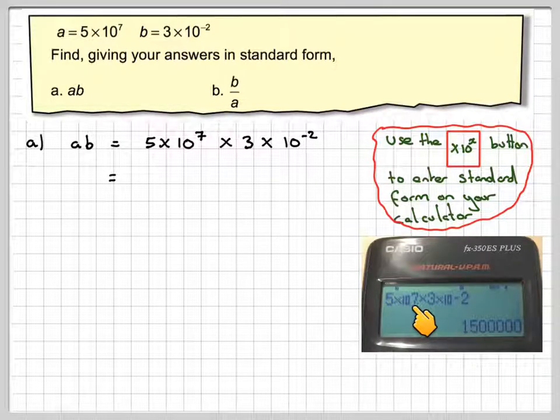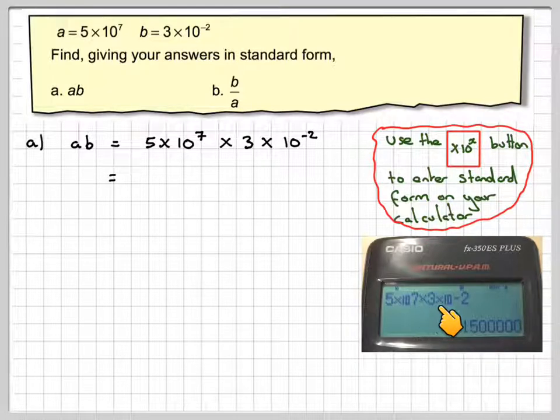5 times 10, 7. No it doesn't look right, that's how you write it. 3 times 10 minus 2, but the minus sign must be the one in the brackets on the left hand side of the calculator. So the minus sign which is in the brackets, 2.